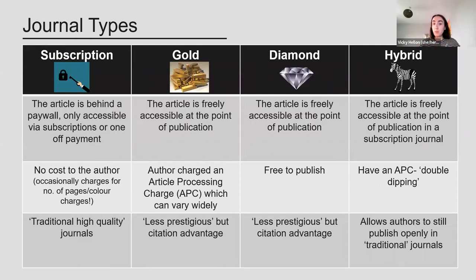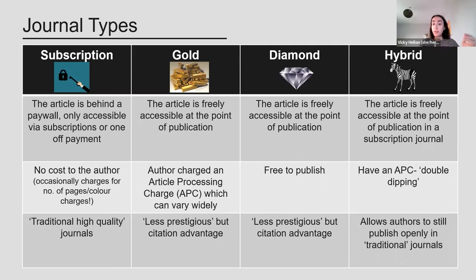The way around this can be diamond open access, which is exactly the same but the article processing charge is paid by a society or a funder. For example, SciELO in South America is a platform supported by South American governments and therefore it's free for authors to publish there. The criticism of open access journals is that they're often seen as lower quality — subscription journals often have very high rejection rates and try to publish the most groundbreaking science, whilst open access journals often publish more and publish any science that is technically sound. A good advantage with open access journals though is that studies have shown your work is more likely to be cited if it's published there, and there's also a citation advantage if you post a preprint too.